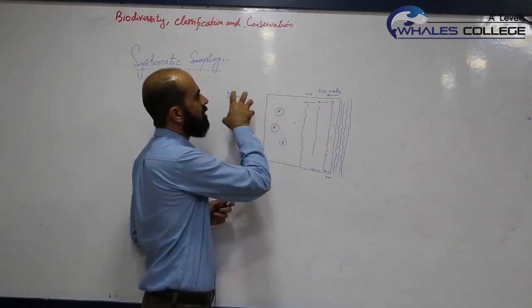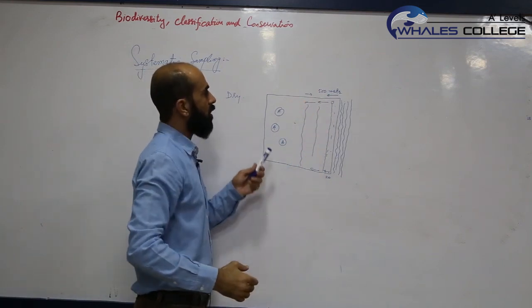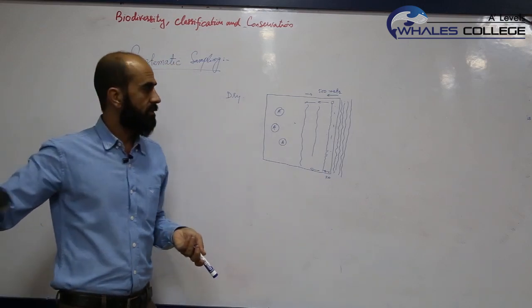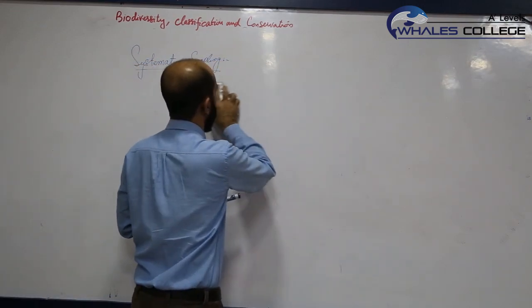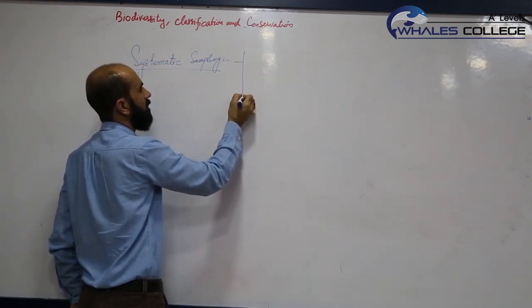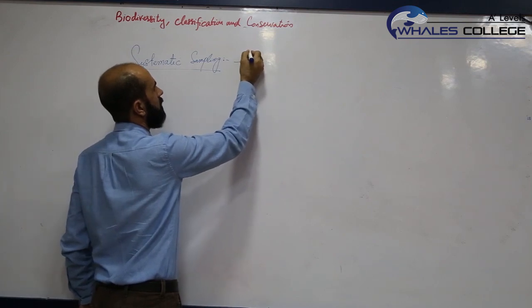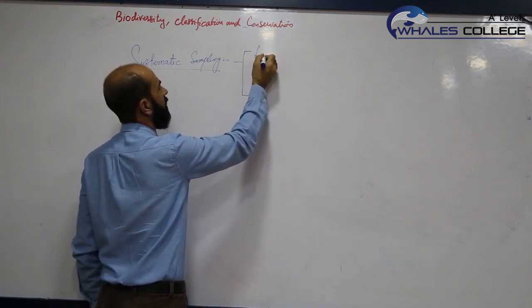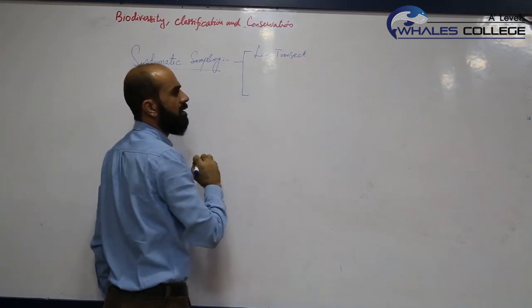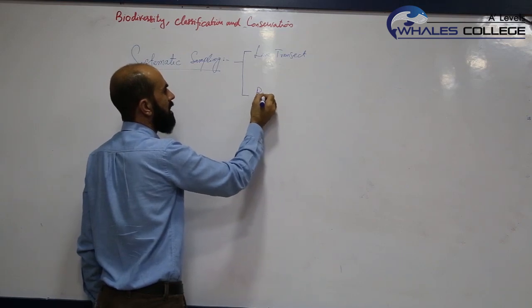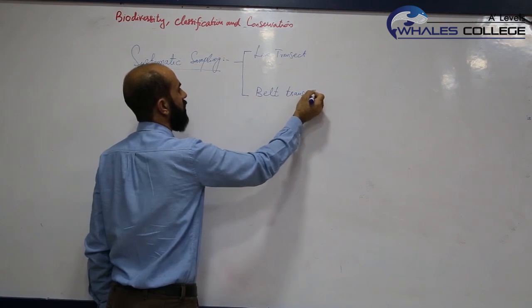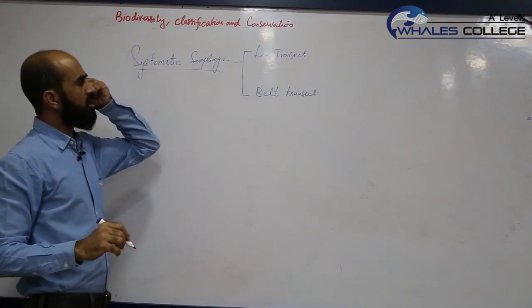There is a lot of water here. So in such cases what should we do? We have to do systematic sampling in a particular pattern, not randomly from everywhere. For this purpose, there are two techniques for systematic sampling: one is called line transect method and one is called belt transect.